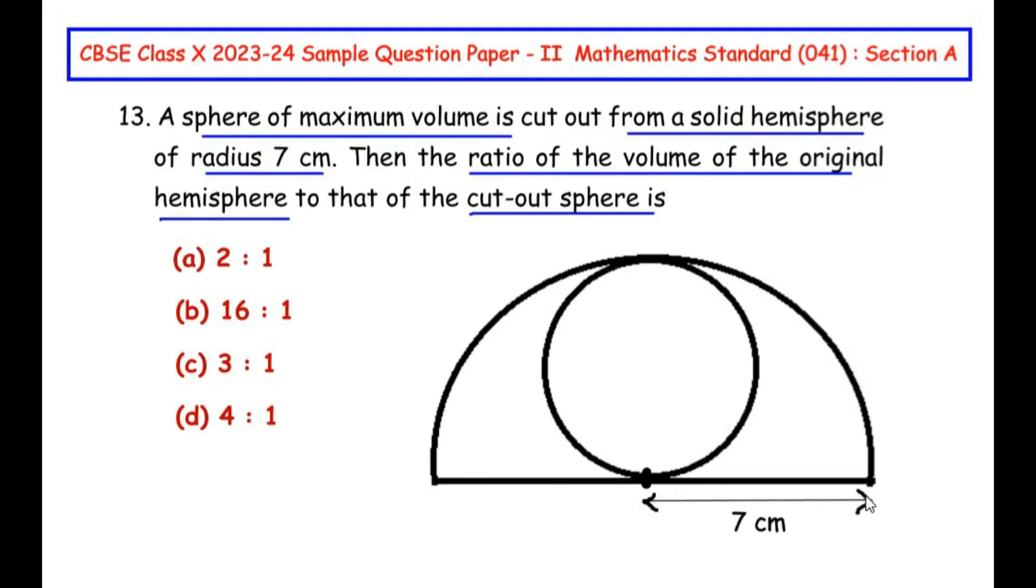Since the radius of the hemisphere is given as 7 cm, let us find the radius of the sphere inside this hemisphere. I have drawn the radius of the hemisphere, and this radius is the diameter of the sphere. So the diameter of the sphere is 7 cm, and the radius is half of the diameter, which is 7/2 cm. I am going to consider the radius of the hemisphere as R₁ and radius of the sphere as R₂.